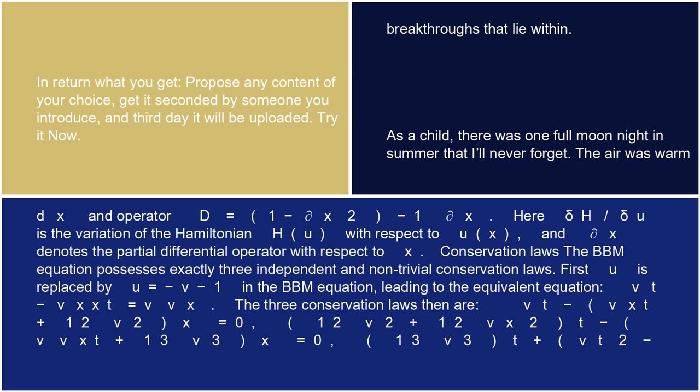The three conservation laws, then, are: (v - vx + 1/2·v²)t = 0, (1/2·v² + 1/2·vx²)t - (v·vxt + 1/3·v³)x = 0,